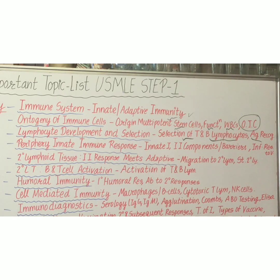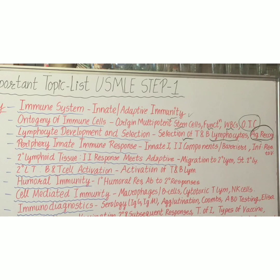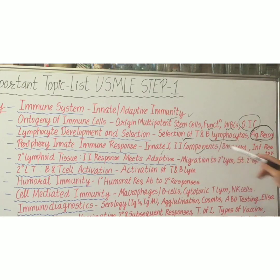In lymphocyte development and selection, subtopics are selection of T and B lymphocytes and antigen recognition. The next topic is the periphery innate immune response, with subtopics covering innate immunity components or barriers and infection response to viruses.